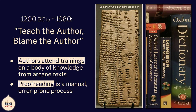We've had trainings. This is a Sumerian-Akkadian bilingual lexicon carved in stone — a bilingual dictionary from about 2300 BC. So for the beginning of time, if you want to write, you have to go to school, attend trainings, and master this body of knowledge from arcane texts. And proofreading is manual, proofreading is grueling. When I was a kid, we were taught to read backwards the thing we'd written, because you'd start skimming if you were just reading. And it was error-prone.